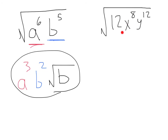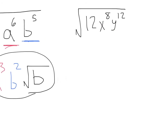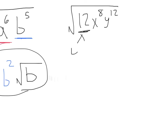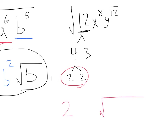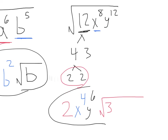Let's take a look at square root of twelve x to the eighth y to the twelfth. First, let's start with the twelve — that breaks down to four times three. Four breaks down to two and two, so I have a pair of twos with one three left over. I put the two on the outside and the three stays inside the square root. Now x to the eighth: two goes into eight four times, leaving x to the fourth with nothing left over. For y to the twelfth: two goes into twelve six times, giving y to the sixth with nothing left over. So my answer is two x to the fourth y to the sixth square root of three.